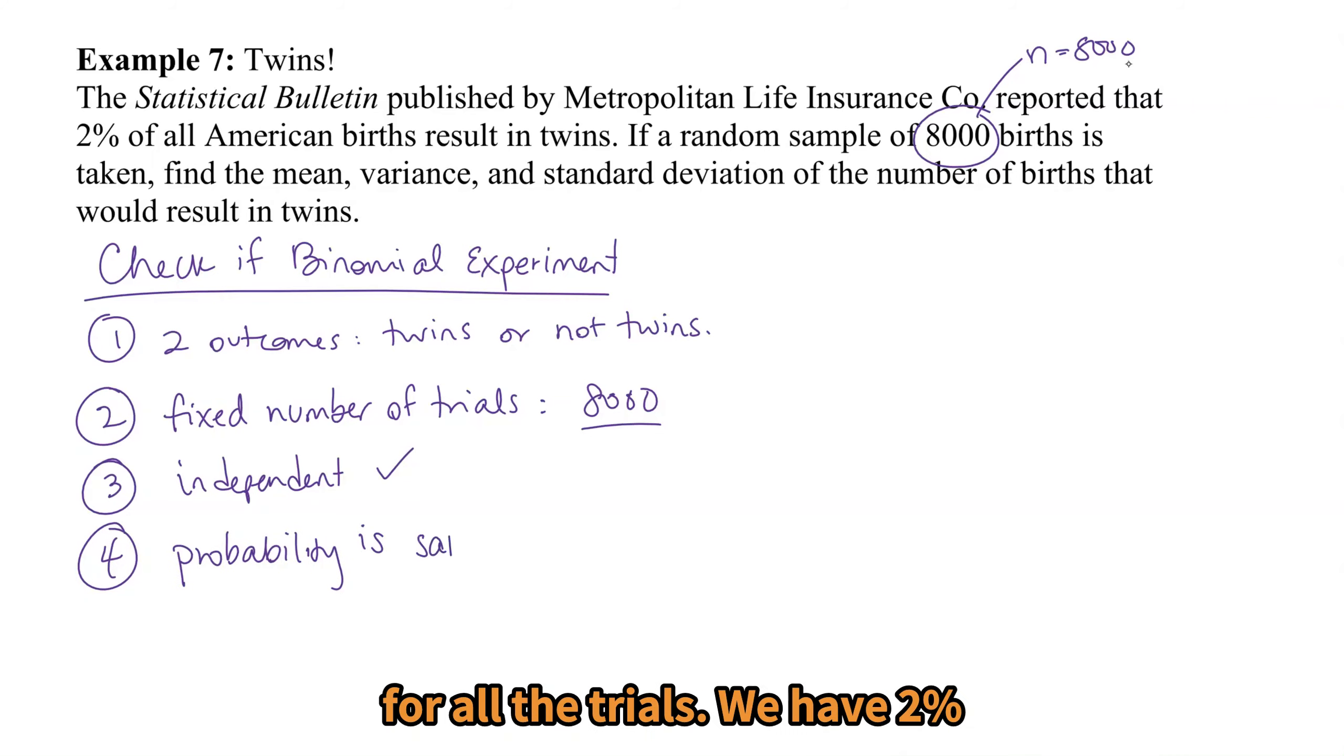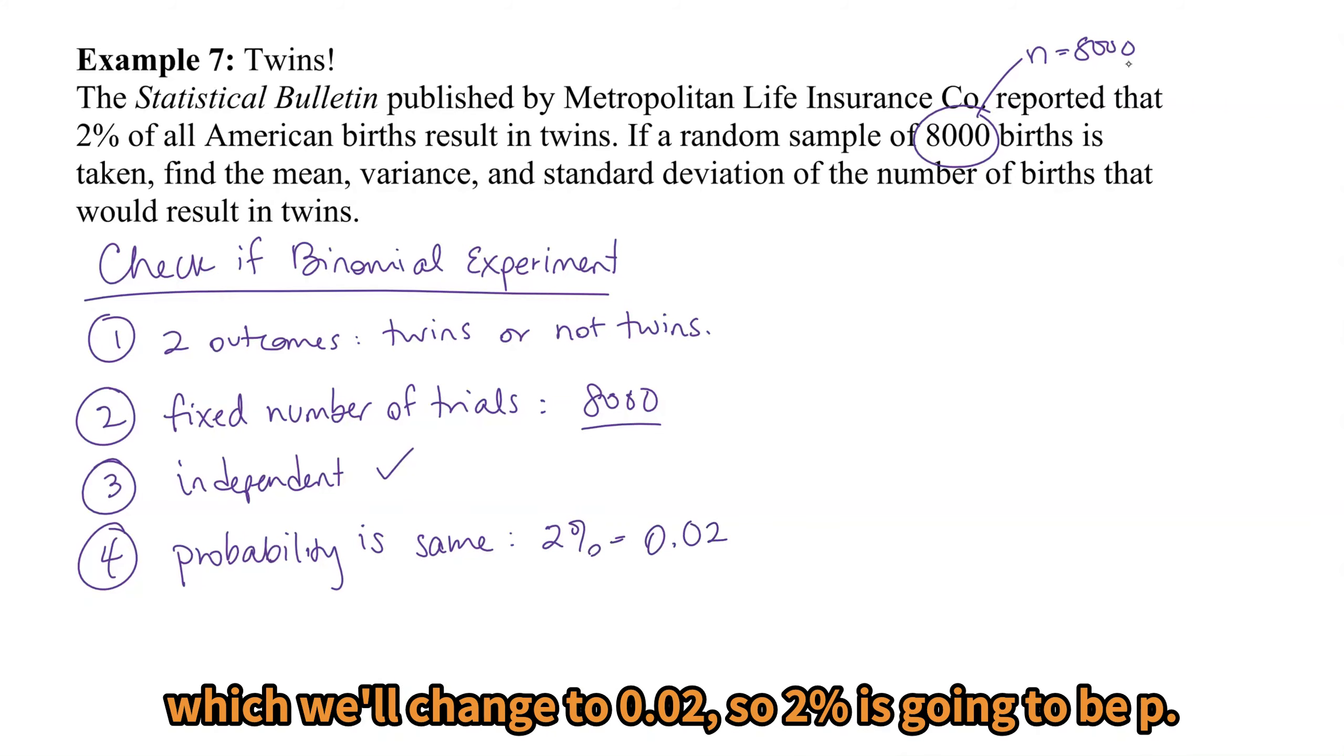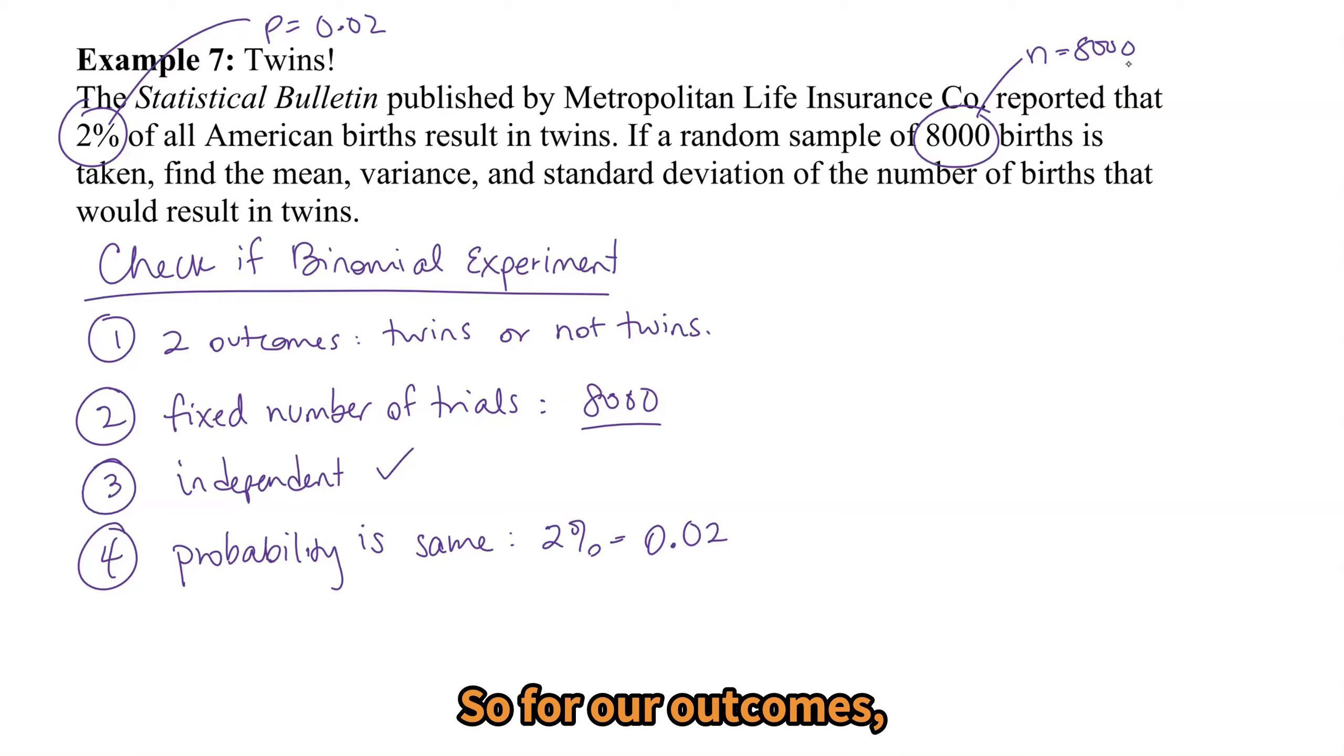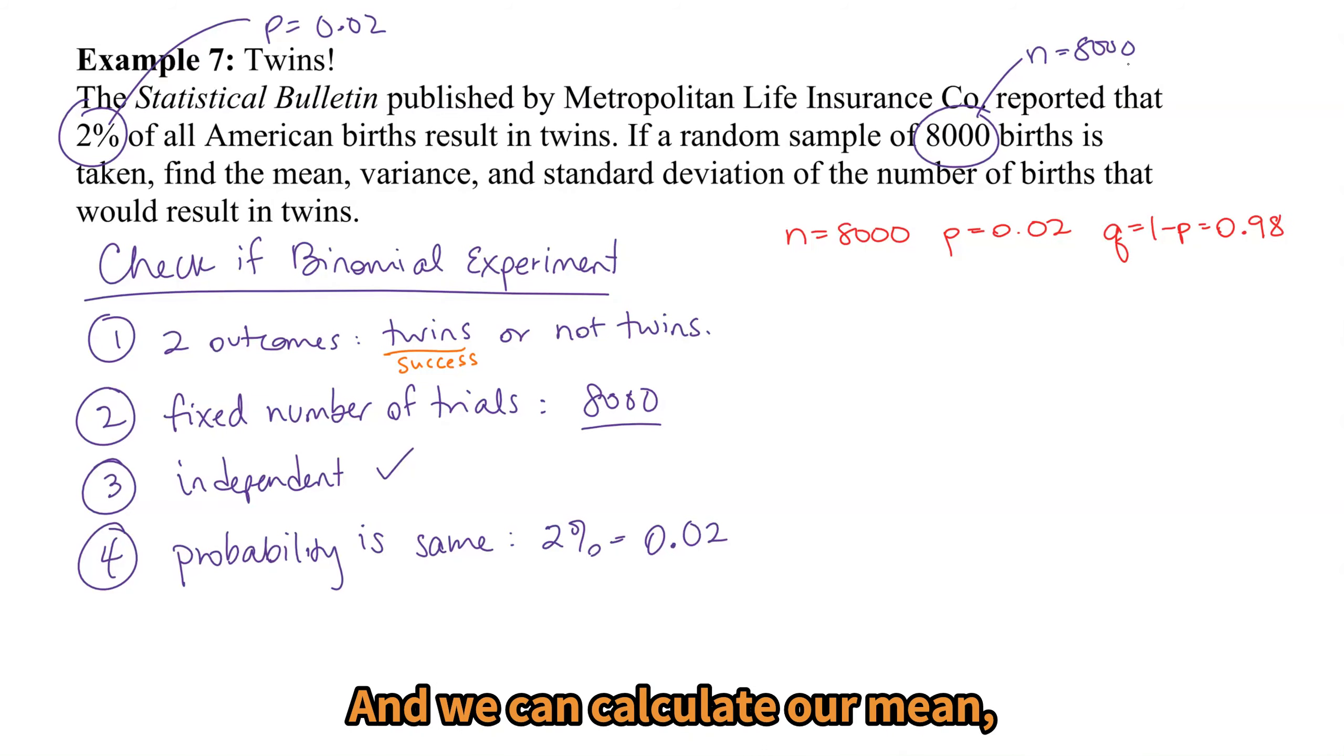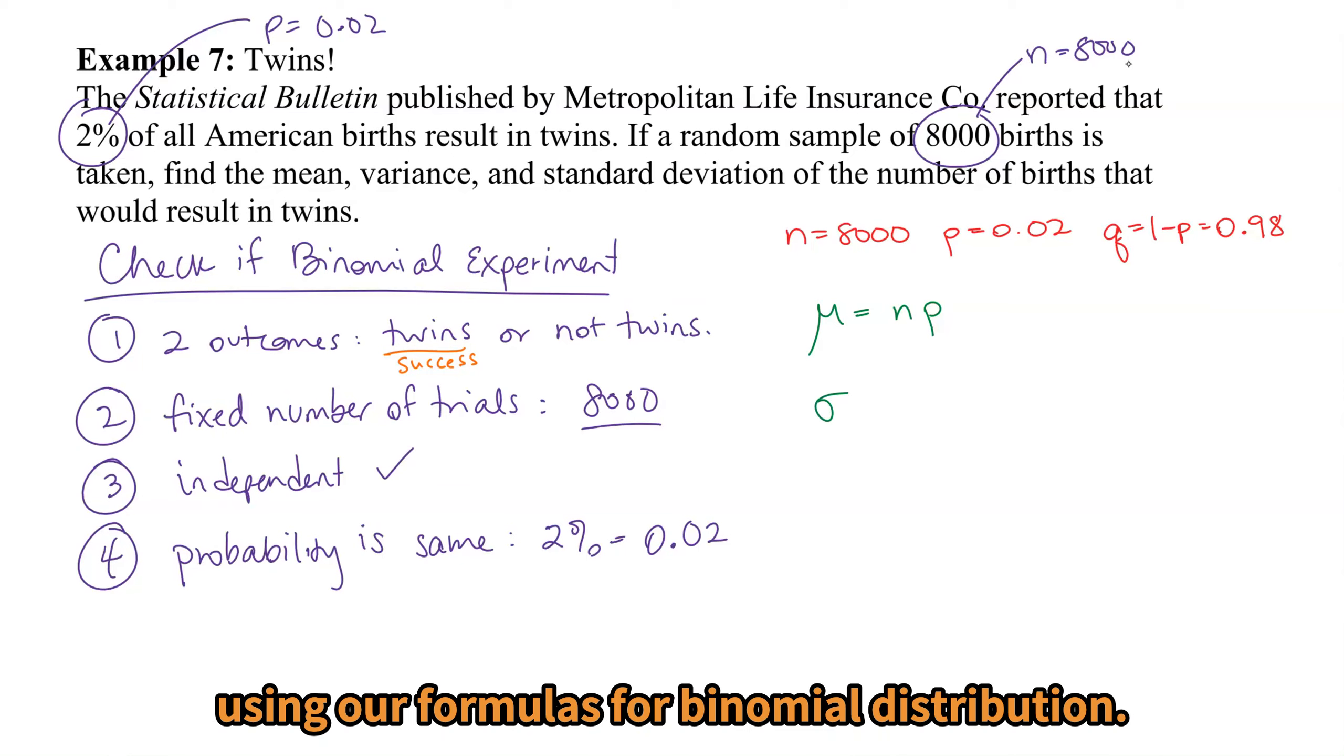The probability is the same for all the trials, and we have two percent, which will change to 0.02. So that two percent is going to be p. So for our outcomes, twins is going to indicate a success. So we have our values: n is 8,000, p is 0.02, q, which is 1 minus p, is going to be 0.98. 1 minus 0.02 is 0.98. And we can calculate our mean, variance, and standard deviation using our formulas for binomial distribution.